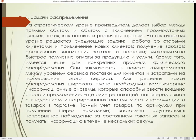Первый вопрос – задачи распределения. На стратегическом уровне производитель делает выбор между прямым сбытом и сбытом с включением промежуточных звеньев, таких как оптовая и розничная торговля. На тактическом уровне решаются следующие задачи: работа со старыми клиентами и привлечение новых клиентов, получение заказов, организация выполнения заказов и поставки, максимально быстрое получение оплаты за продукцию и услуги.